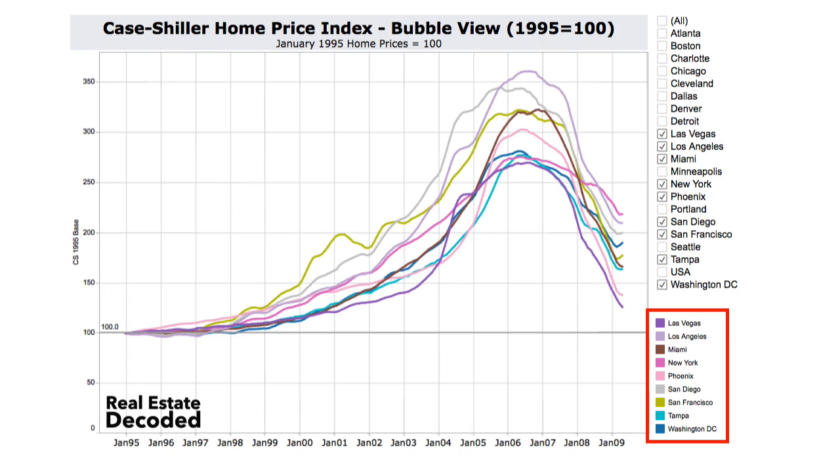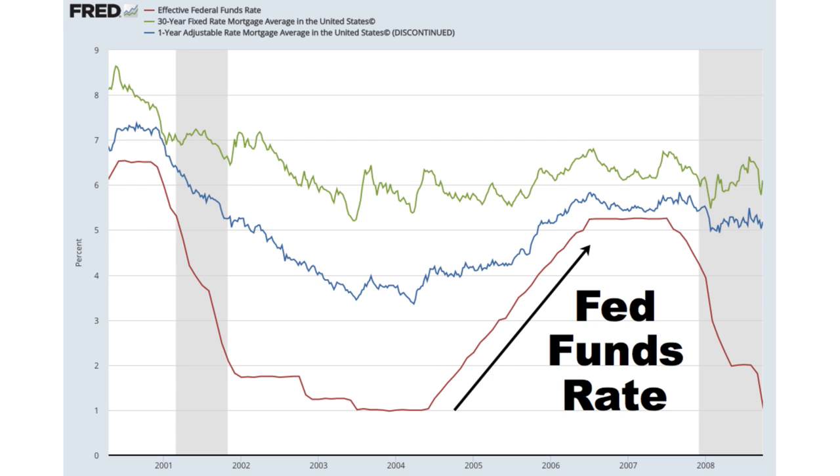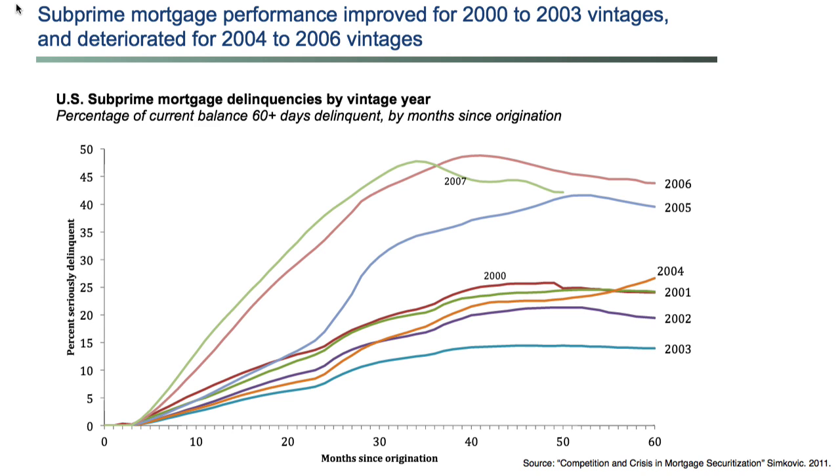Combined with the low interest rates, home prices absolutely skyrocketed in the bubble cities during 2004 and 2005. The Fed began slowly increasing interest rates in 2004, but instead of slowing things down people became even more manic about buying homes right away before the low rates were gone forever. Eventually home prices got so high that market psychology changed from 'these prices seem crazy high but they're increasing crazy fast so let's buy ASAP' to simply 'these prices seem crazy high and they're not increasing fast anymore, so let's just wait and see.' In 2005, the number of home sales peaked. In 2006, home prices peaked. But the mortgage industry wasn't done — they continued to lower lending standards in a desperate attempt to keep the music playing.